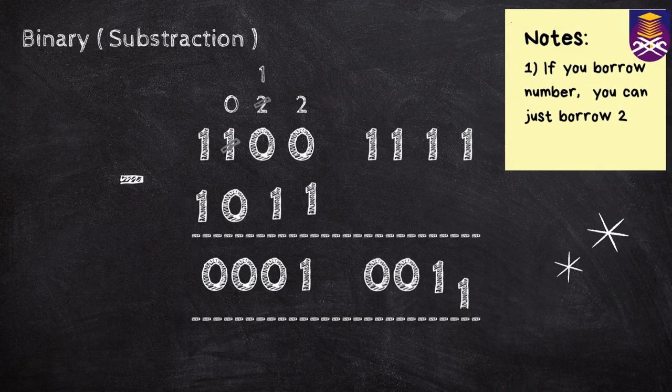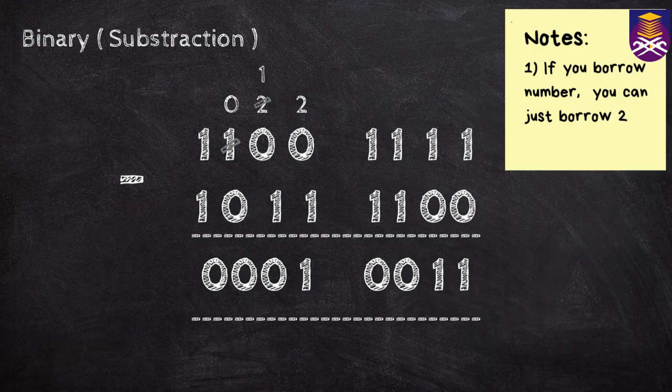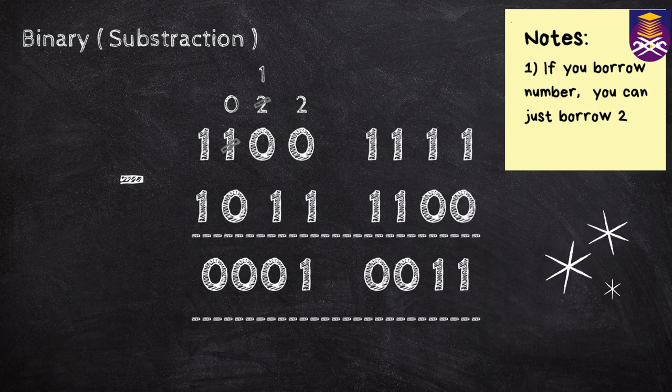Next, in binary subtraction, you must remember that if you borrow a number, you can just borrow 2. Such as example, in fifth from the right there is 0 minus 1. As we can see there, I borrow a number from the left, and the 0 will be 2.